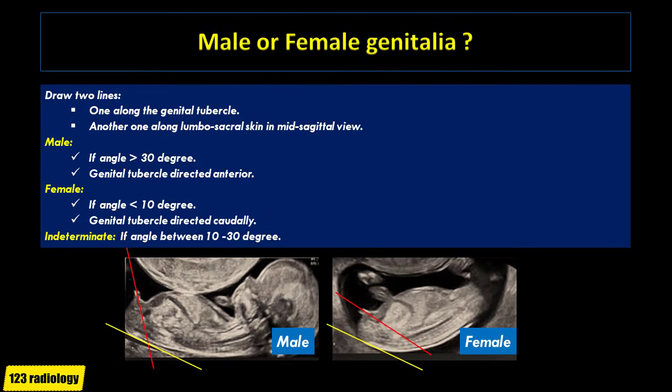Another method to differentiate male from female early in pregnancy is by drawing a line through the genital tubercle that intersects with another line along the skin surface of the lumbosacral spine in the mid-sagittal plane. If the angle is greater than 30 degrees with anteriorly directed genital tubercle, this denotes male fetus. If the angle is less than 10 degrees with caudally directed genital tubercle, this denotes female fetus. If the angle is between 10 and 30 degrees, this is indeterminate.